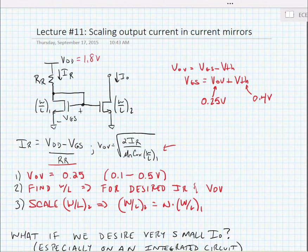N doesn't have to be an integer. We can make any scaling factor that we like if we're doing this in an integrated circuit. If we're doing this with discrete transistors, of course, N would have to be an integer.